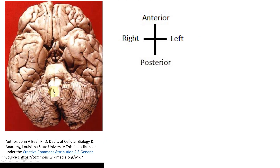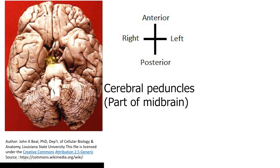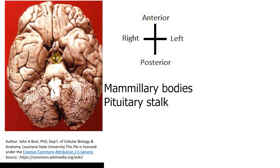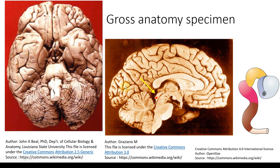Looking at the ventral view again: the medulla oblongata, pons, and cerebellum are visible. The two cerebral peduncles are the ventral aspect of the midbrain. Above that are the mammillary bodies and the pituitary stalk, which correspond to the hypothalamus — the only part of the diencephalon visible in the intact brain. Above that you can see the enormous telencephalic vesicles.